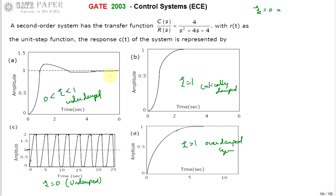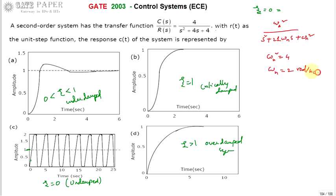We need to find the zeta value for the given transfer function. The standard second-order transfer function is ωn² divided by (s² + 2ζωn·s + ωn²). Comparing with the given transfer function: ωn² = 4, so ωn = 2 rad/s. Next, 2ζωn = 4, so ζωn = 2.